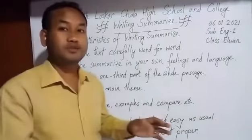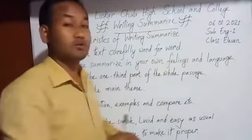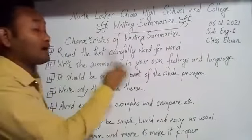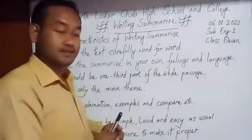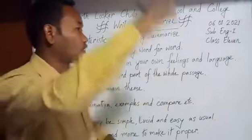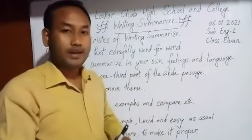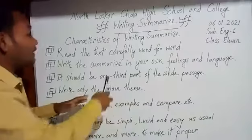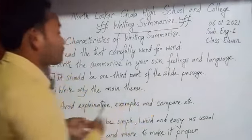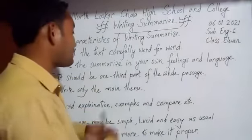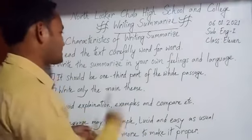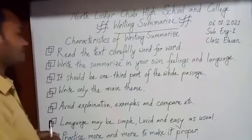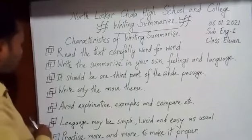Number three: the summary should be one-third part of the whole passage. Suppose the passage is very long — you have to measure it so that your summary is one-third of the whole passage. Divide the passage into three parts and write the main one part of the whole passage.